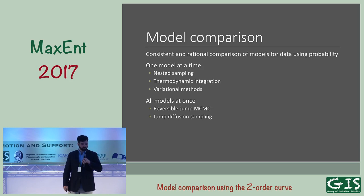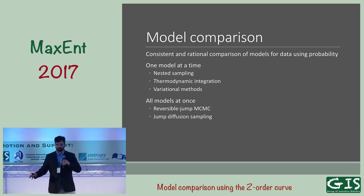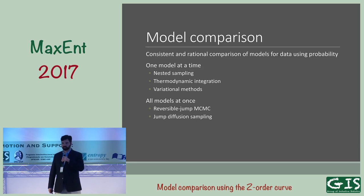There are also techniques you can use which look at all models at once and sample the joint distribution over the entire combined parameter space for all the models. Such techniques include reversible jump Markov chain Monte Carlo and jump diffusion sampling.